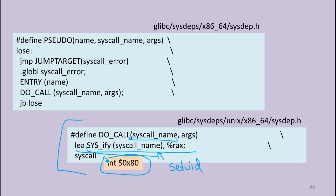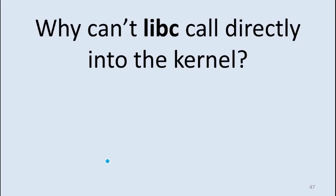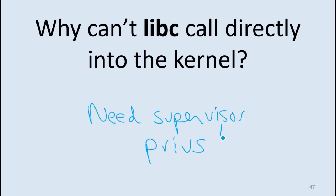We can't call into the kernel directly. In order to actually run inside the kernel in a useful way, the processor has to be in supervisor mode. Normal function calls can't change the mode of the processor. But to make a system call happen, we need to change the mode of the processor. To do something like setuid, we need supervisor privileges — we need to be running in the kernel. We can't do that directly, and a regular function call is never going to change our privileges. That's why we need to do this.